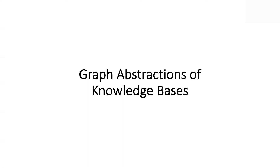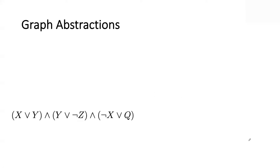Let's get started with the second segment of today's lecture. We have two topics here. The first is the notion of graph abstractions of knowledge bases. If you have a knowledge base, which typically has been a CNF in our cases — that's the standard way of representing inputs — you can construct a graph that captures the structure of this CNF. By reasoning about the properties of that graph, you can often provide guarantees on computational complexity.